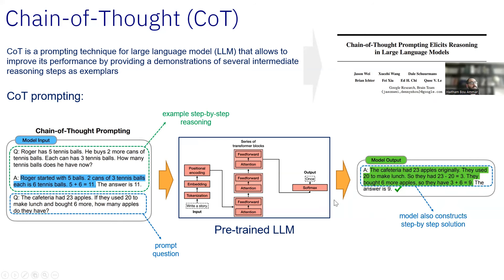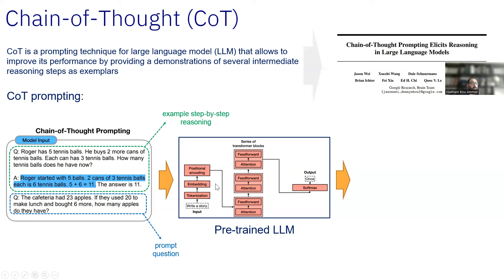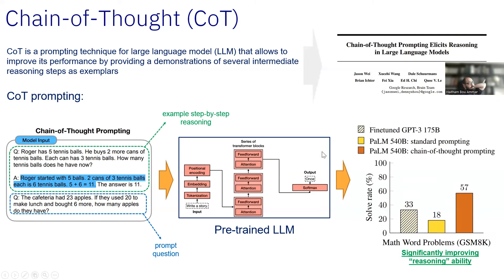Doing this type of step-by-step reasoning improved the reasoning ability of those models on the same GSM8K dataset from about 33% for fine-tuned GPT-3 175 billion and PALM 540 billion to about 57% successful. This is kind of interesting because what you were able to do is teach the model to do something reasonably new — something it didn't necessarily see before — by introducing this COT prompting, this chain of thought prompt.